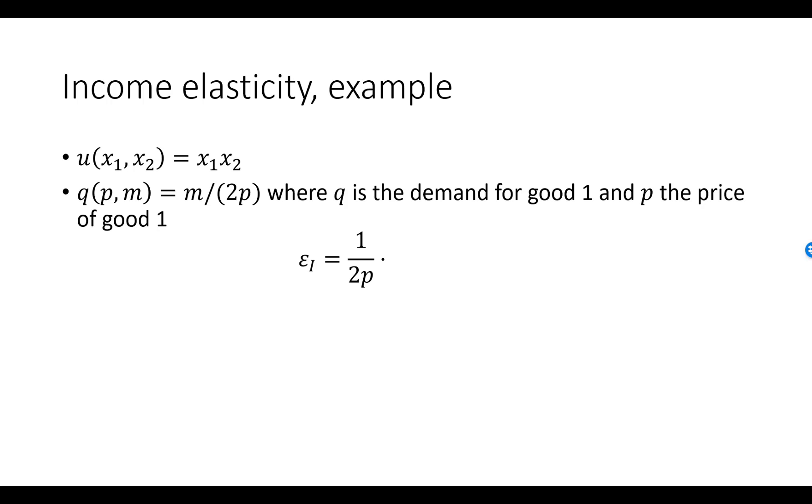The derivative, dq/dm, is 1 over 2p. Multiply this by m and divide by q, which is m over 2p. The m's will cancel, the p's will cancel, and the 2's will cancel. The income elasticity of demand in this example is precisely 1.